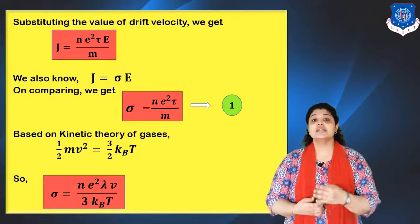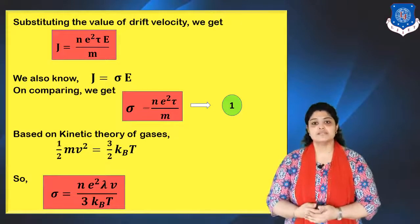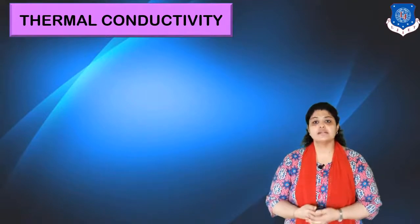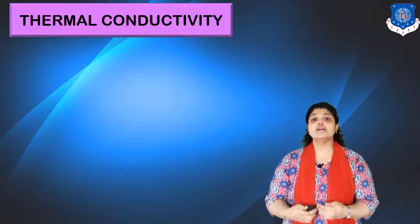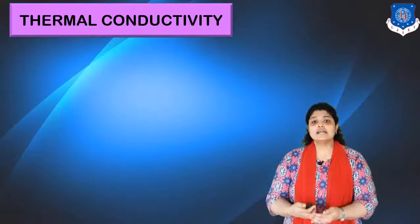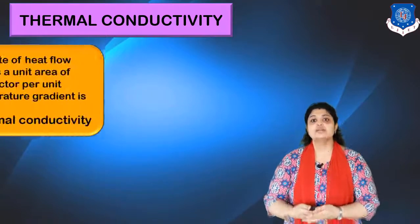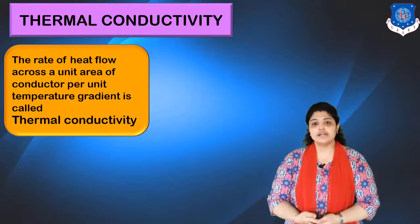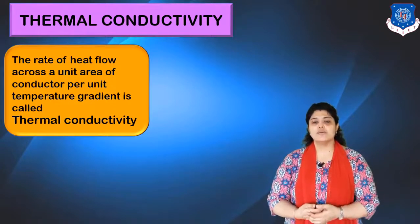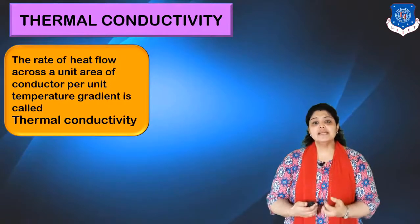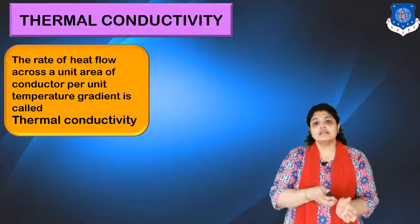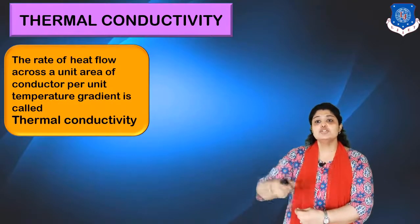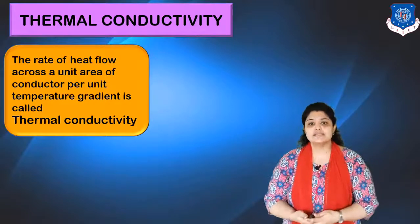From this equation, we can clearly see that conductivity decreases if temperature increases. Now let us move on to the second conductivity of metal: thermal conductivity. Metals are good conductors of heat and always conduct heat from higher to lower temperature. Thermal conductivity is defined as the rate of heat flow across a unit area of conductor per unit temperature gradient. Temperature gradient refers to how much temperature drops over a distance during heat flow — the temperature difference between two points.